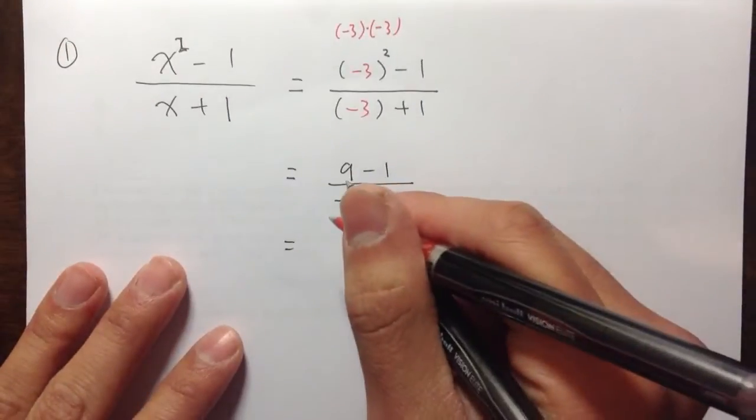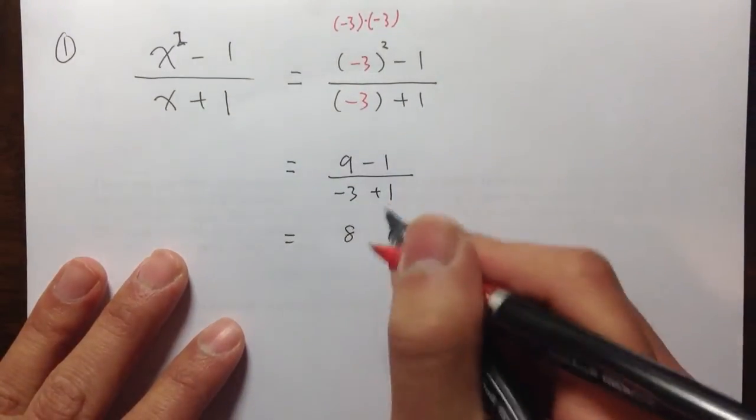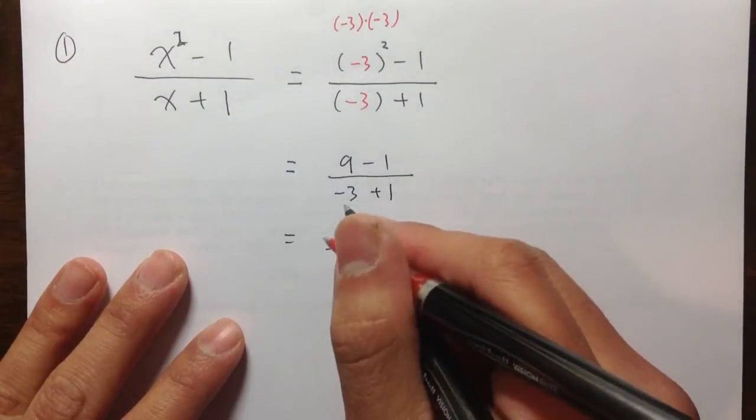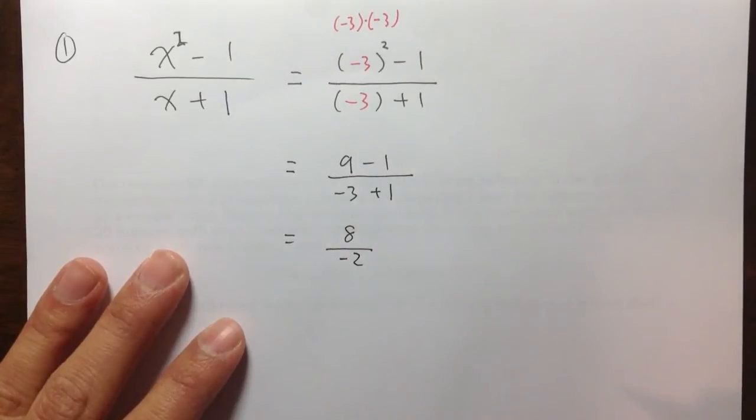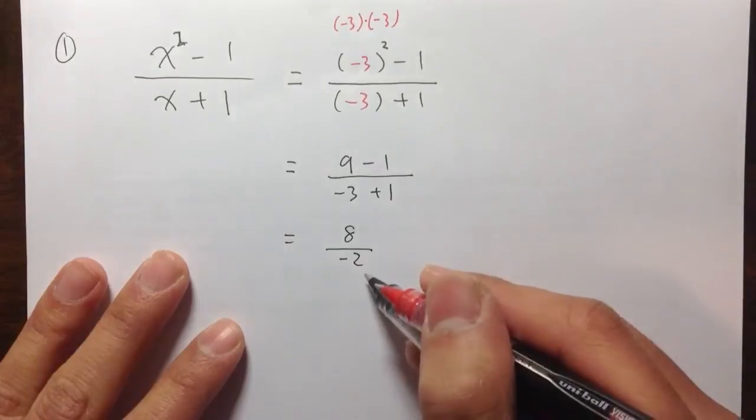And then, 9 minus 1 is equal to 8. We're doing the top first and then do the bottom. Over negative 3 plus 1, which is negative 2. So do the top and then do the bottom. We get 8 over 2.